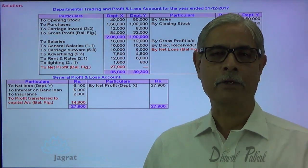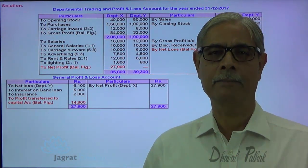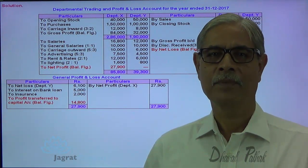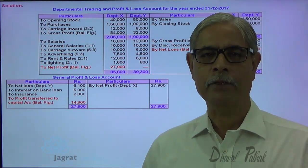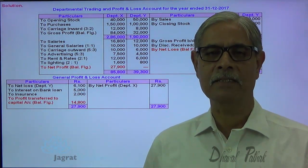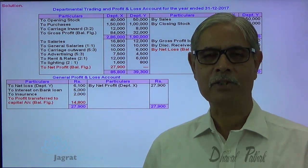The important point to emphasize: expenses which are unallocable, or decided not to allocate, are debited to the general profit and loss account. Similarly, such incomes are also credited to the general profit and loss account. I hope you have followed all these things. Thanks.